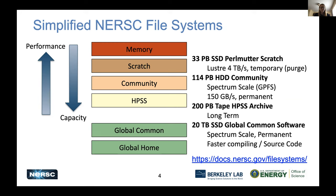Below scratch is the community file system, a Spectrum Scale file system (previously known as GPFS). It doesn't have as fast a streaming rate; it's intended for longer-term data holding and sharing data within your project, and there's no purge there. At the bottom layer we have our HPSS tape archive, intended for long-term data storage. We also have global common and global homes, which are more utility file systems better suited for things like software stacks.